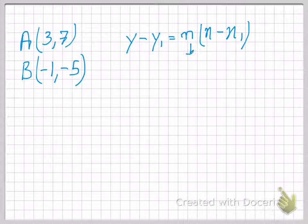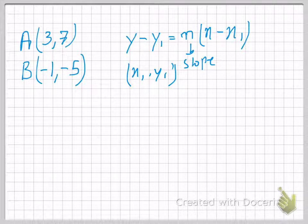Why? Because m is the slope, and x1, y1 is basically any point that's lying on this particular line. Now, let's first of all calculate the slope. Now, the slope, as you already know, is y2 minus y1 over x2 minus x1.